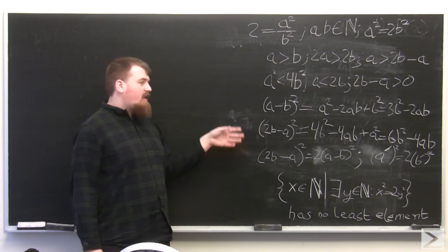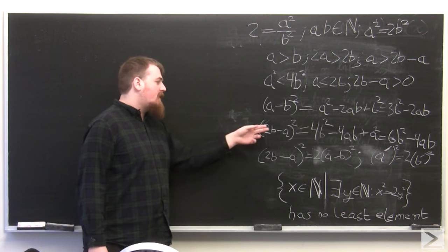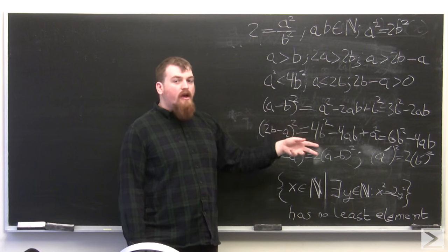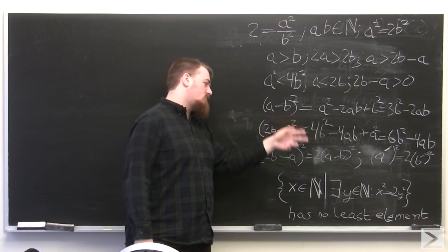Moving on, if we calculate a minus b squared and 2b minus a squared respectively, we get 3b squared minus 2ab and 6b squared minus 4ab, where we use the equivalence a squared equals 2b squared.